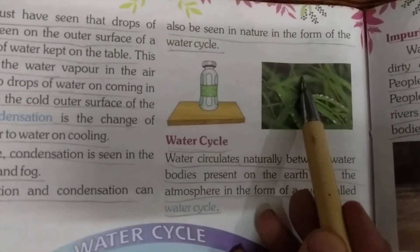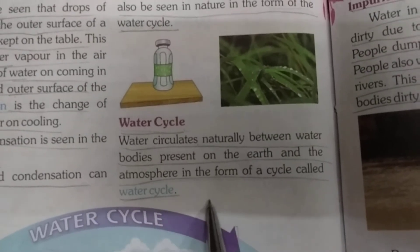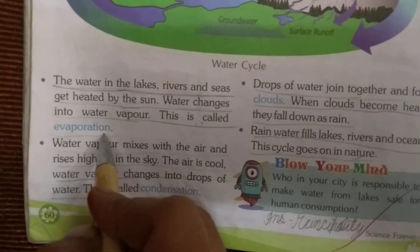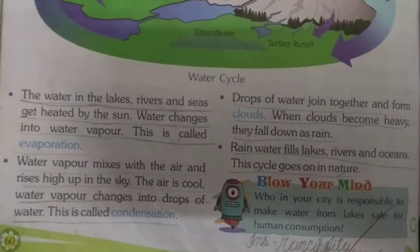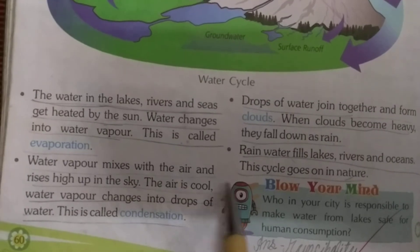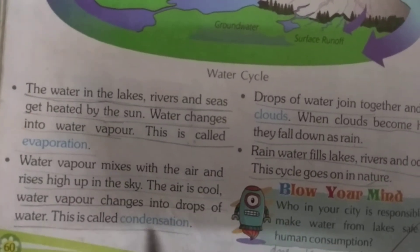Evaporation and condensation can also be seen in nature in the form of the water cycle. Water circulates naturally between water bodies present on the earth and the atmosphere in a cycle called the water cycle. The water in lakes, rivers and seas gets heated by the sun — water changes into water vapor, this is called evaporation. Water vapor mixes with the air and rises high up in the sky. Where the air is cool, water vapor changes into drops of water — this is called condensation.